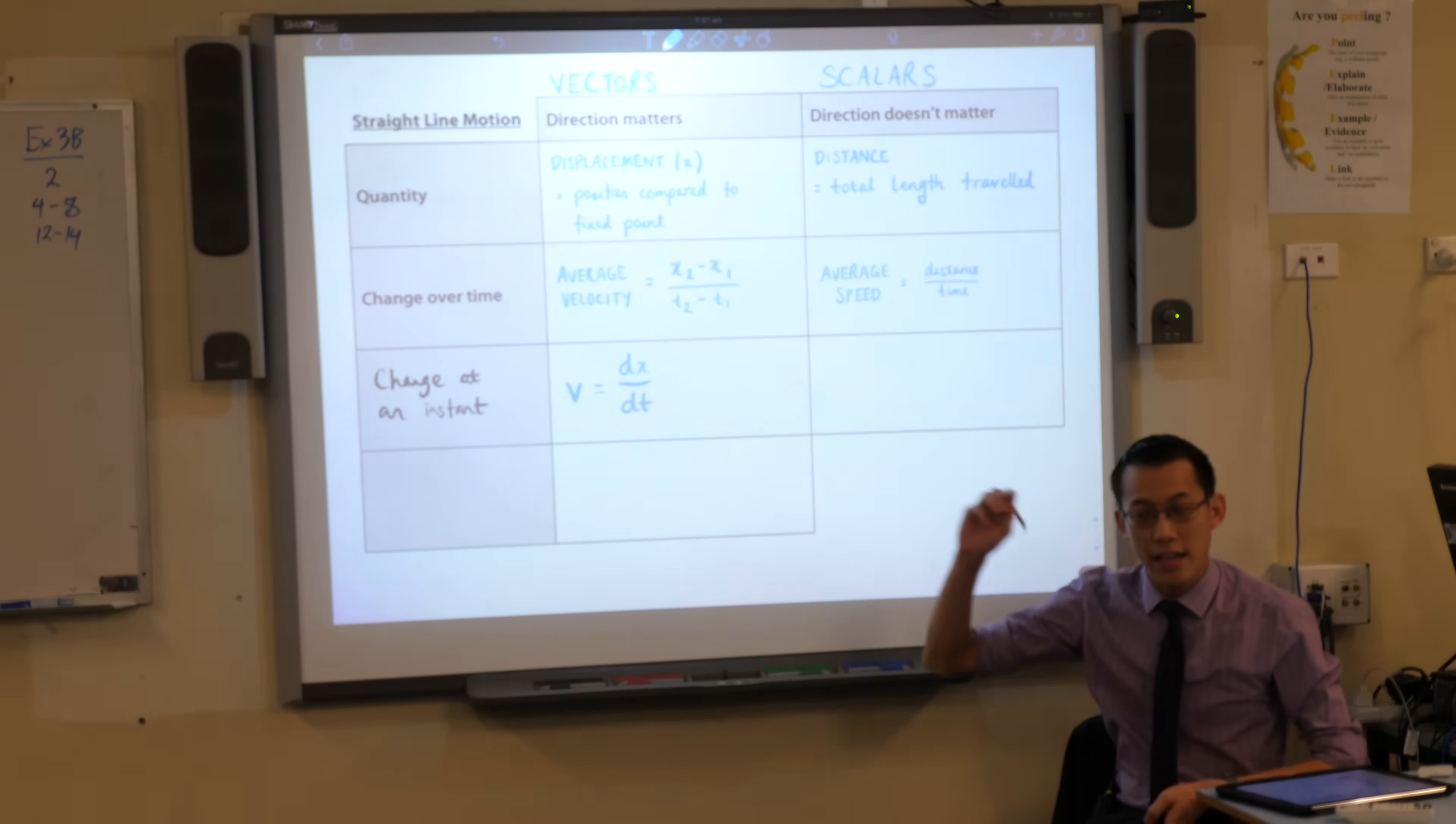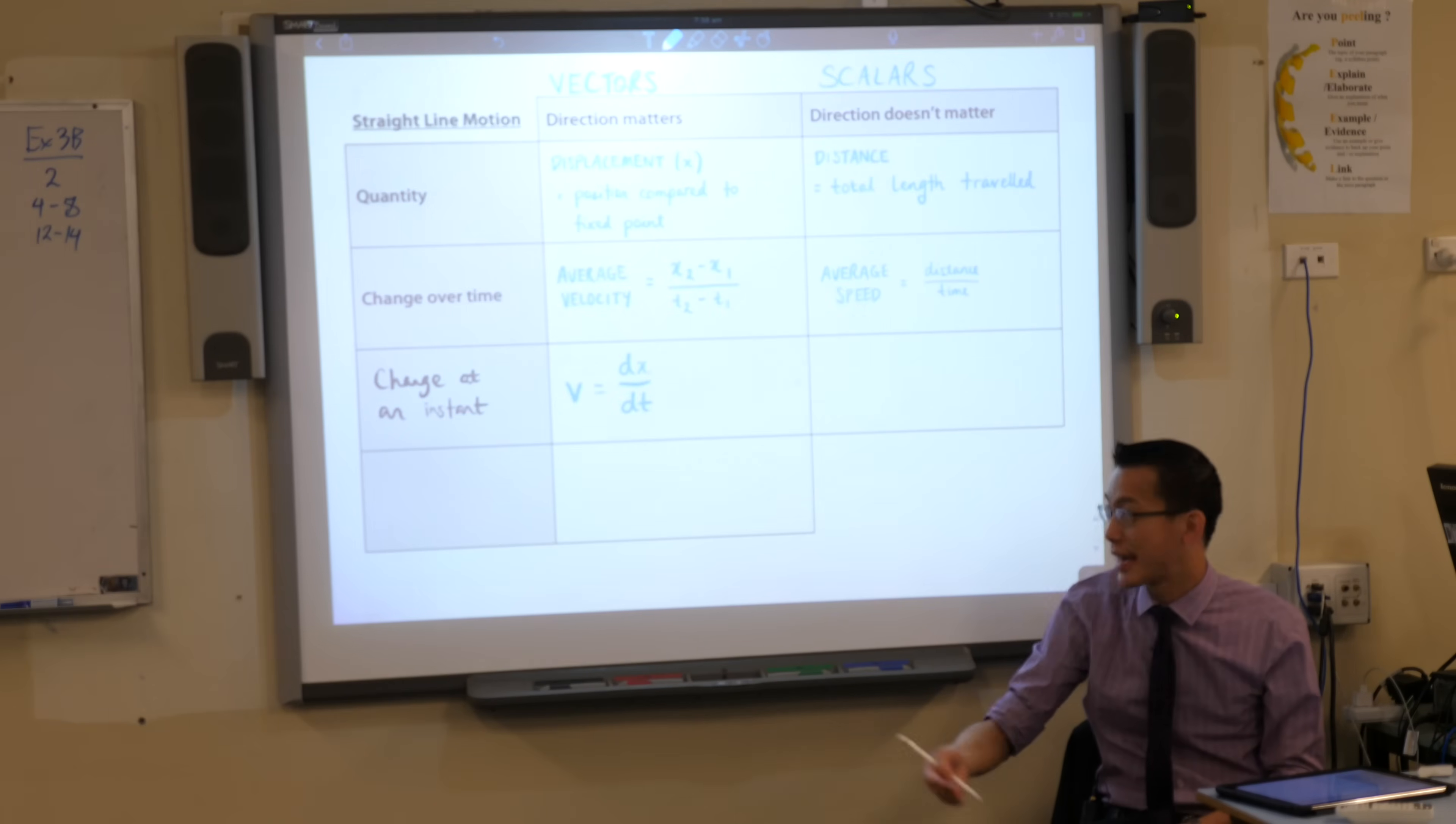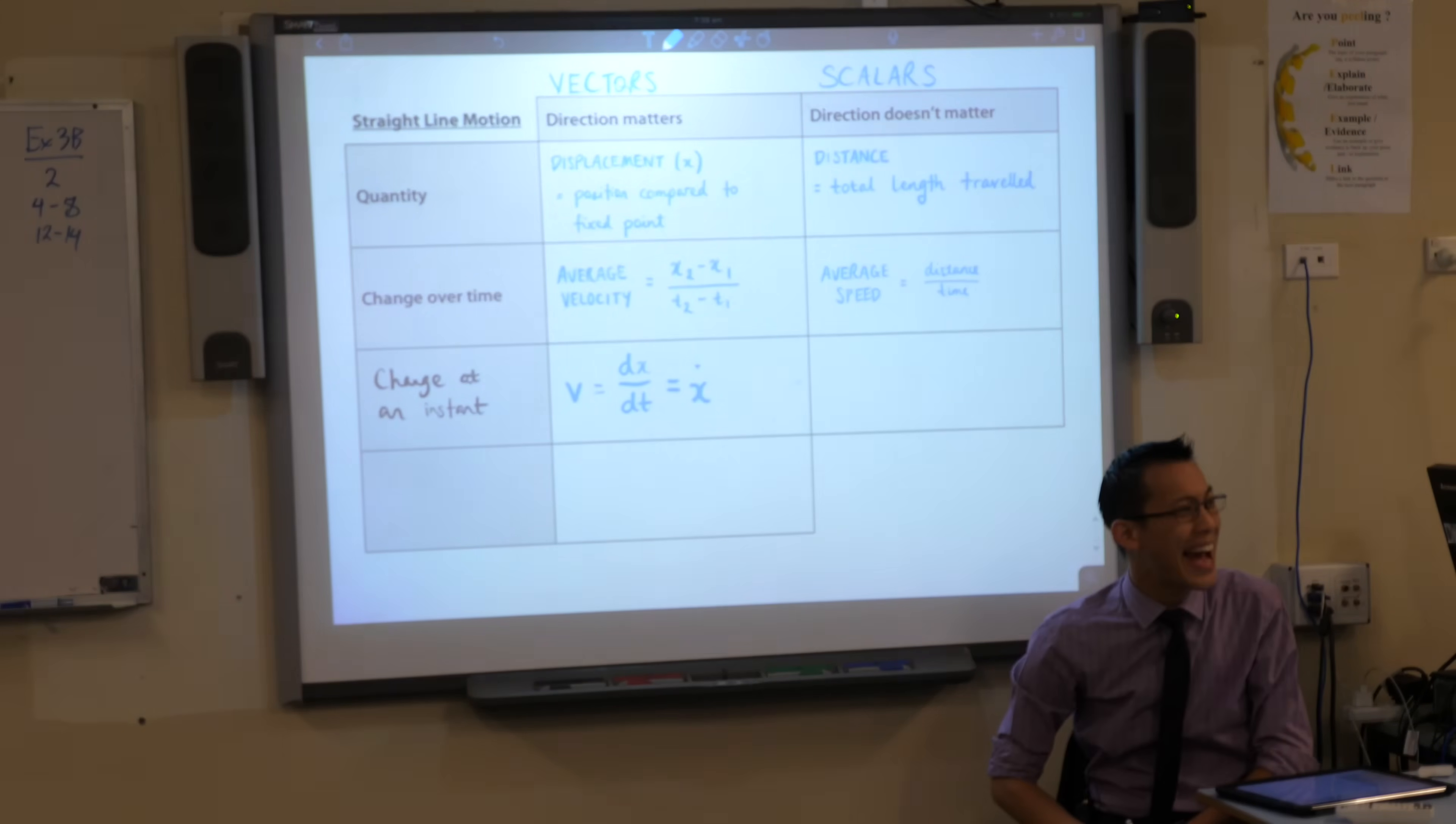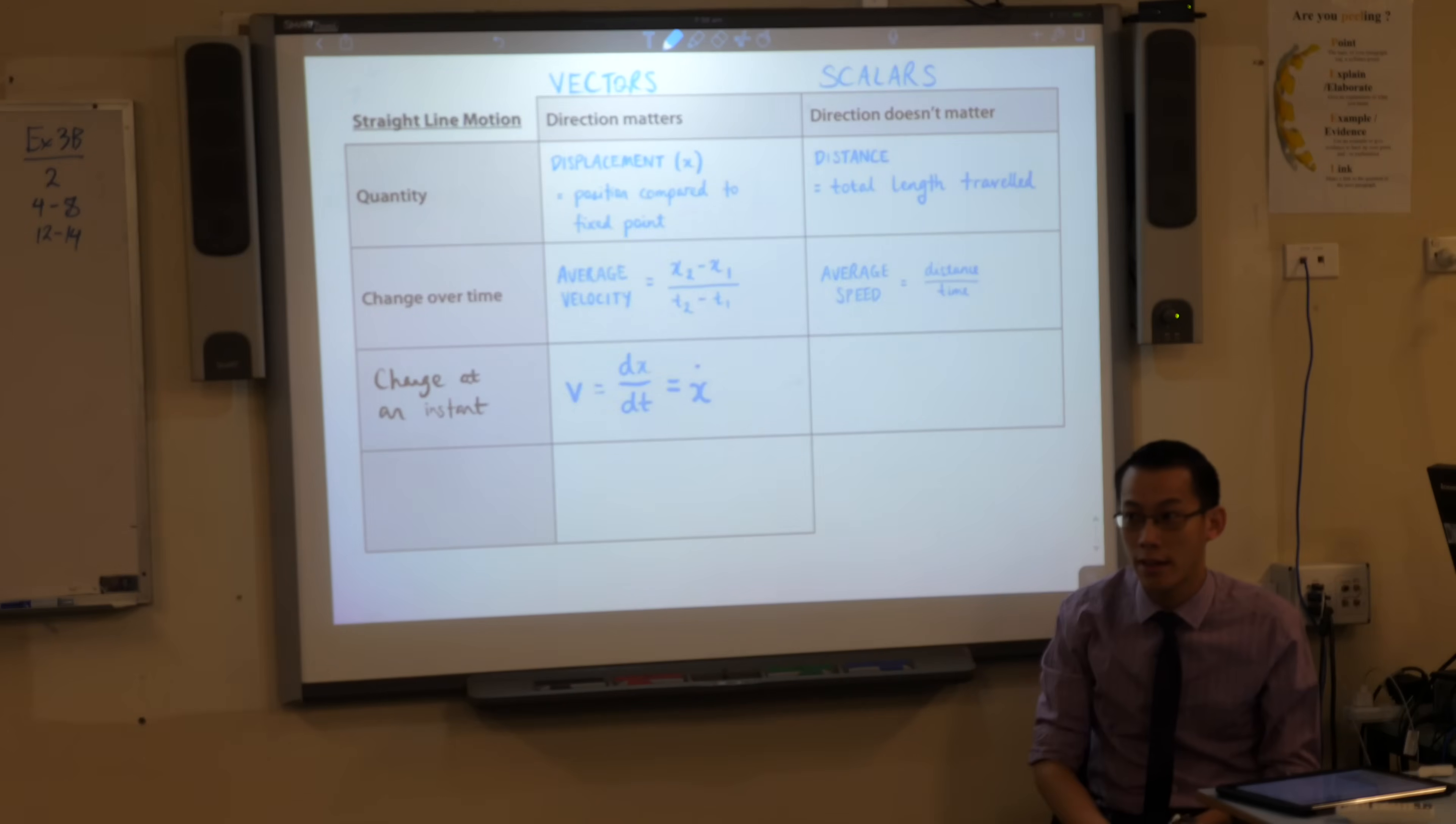Now differentiating with respect to time is pretty much as common as differentiating with respect to x. Time is the one that you're going to see most frequently from this point on. As a consequence of it being so common we get a new piece of notation that means specifically differentiate with respect to time, and it's x with a little dot over the top. You will see x dot a whole lot so you want to recognize it.